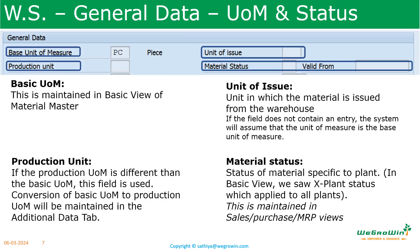Here we see the basic unit of measure, which was maintained in the basic view of material master — it is the fundamental measurement of the material. Then we see the production unit. There are cases where the basic unit of measurement may be kilograms, but when you do the production, you may be doing it in meters. For example, when you buy steel you may buy in weight — kilograms — but when you use it in production you may work in length. So at that time the production unit is a different unit. The relation between basic unit of measure and production unit is maintained in the additional data tab when creating the material master.